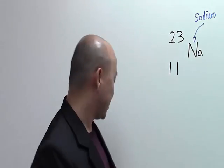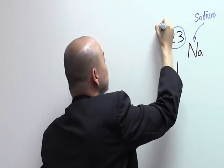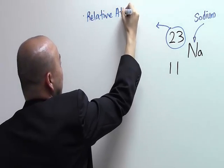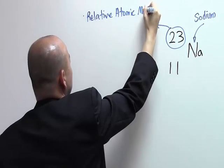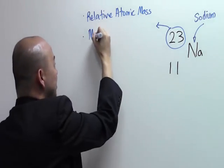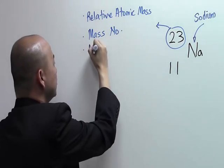The 23 refers to the relative atomic mass. Sometimes we also call it the mass number or the nucleon number.